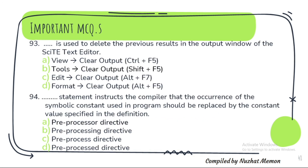Question 93: What is used to delete the previous results in the output window of the Skite text editor? The correct option is B — Tools > Clear Output, or you can use Shift+F5. Question 94: The preprocessor directive statement instructs the compiler that the occurrence of this symbolic constant used in the program should be replaced by the constant value specified in the definition — option A, preprocessor directive. Thank you so much.